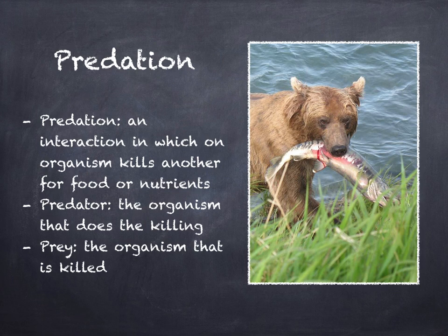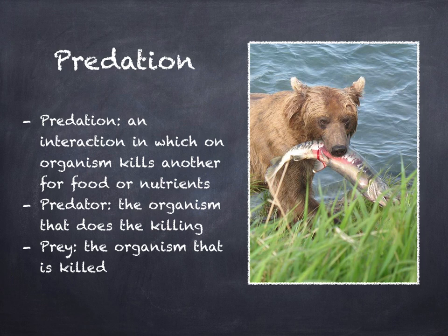Predation: An interaction in which one organism kills another for food or nutrients is called predation. The organism that does the killing is the predator. The organism that is killed is the prey. Even though they do not kill their prey, organisms like cows and giraffes are also considered predators because they eat plants. Predation can have a major effect on a prey population size. When the death rate exceeds the birth rate in a population, the population size can decrease.